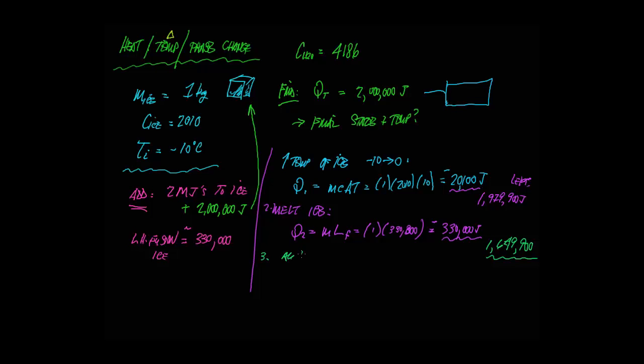Now that it's all water, it's all liquid, what do we do now? Well, since it is all liquid, we can now use the MC delta T. Let's find out how much it takes to go all the way to 100. That's 1 times 4186 times 100, and that gives us 418,600. If we subtract from that, we're still left with 1,002,000. The idea is we've taken all the way up to liquid to the boiling point.